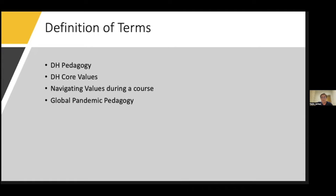The DH core values that I specifically refer to in my talk come out of a much older publication by Lisa Spiro called 'This is Why We Fight: Defining the Values of the Digital Humanities' — it's a simple, interesting, and very rich chapter that seems easy for my students to grasp. When I say navigating values during a course, I mean that students have relied on these values to accomplish assignments and learn course materials during unprecedented, isolating, and financially taxing situations in Lebanon.